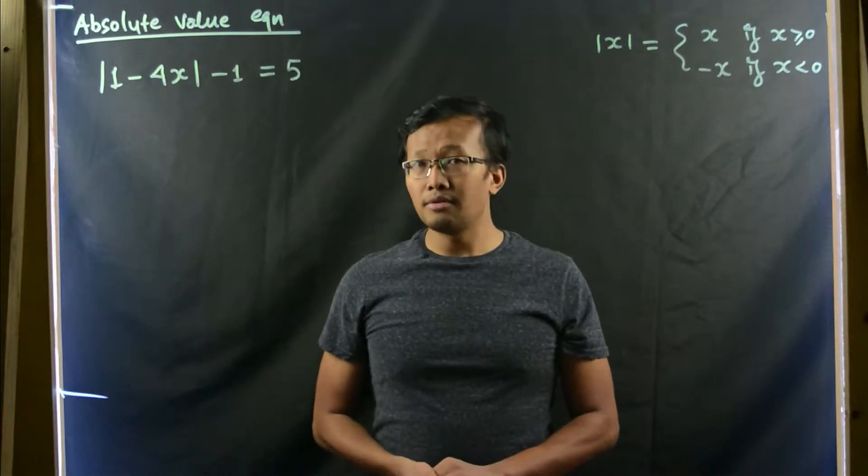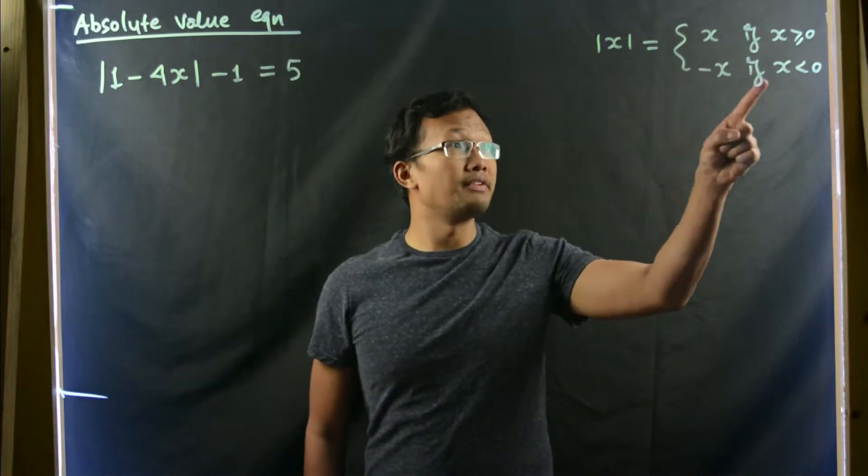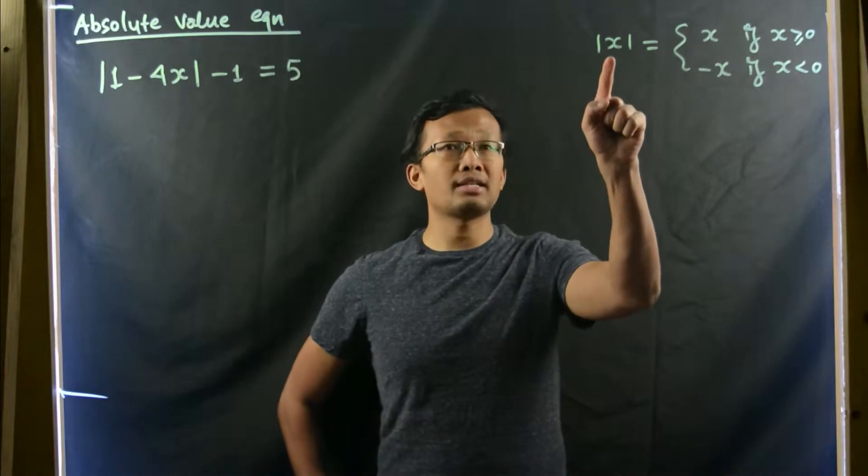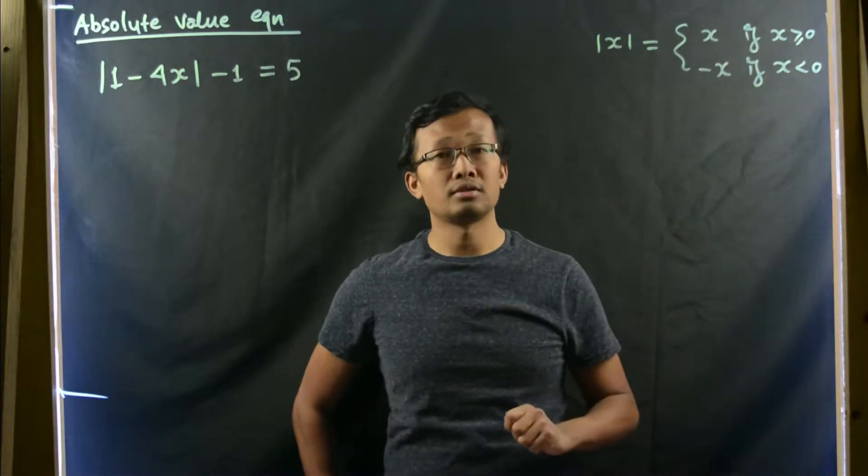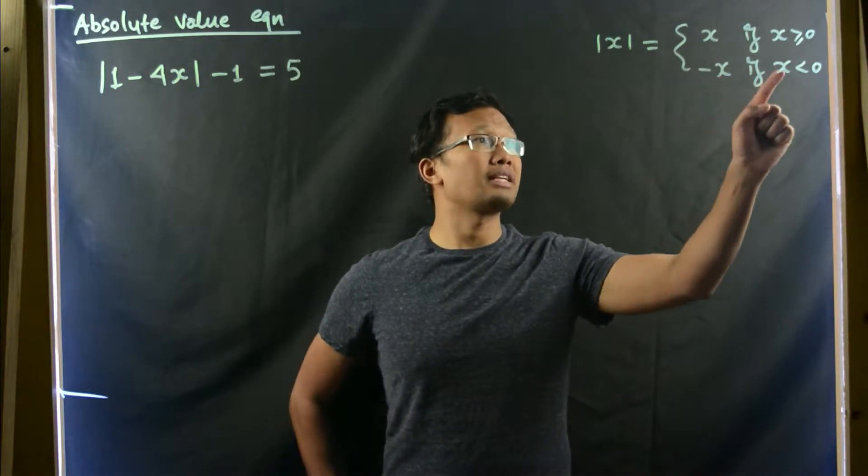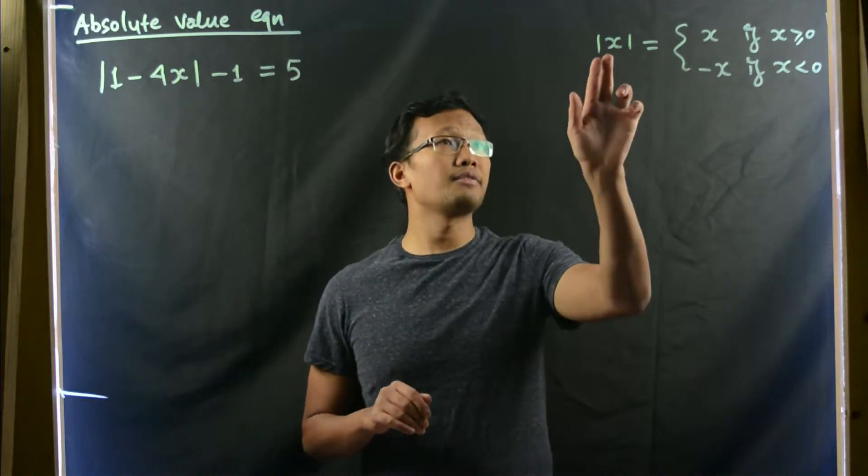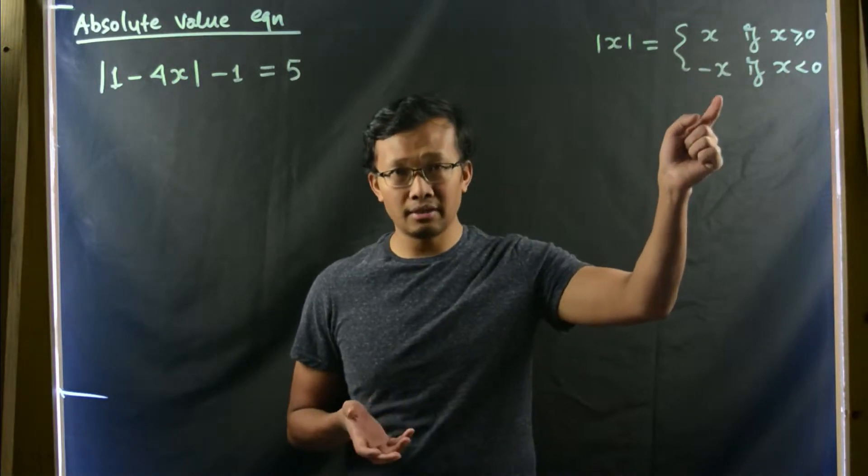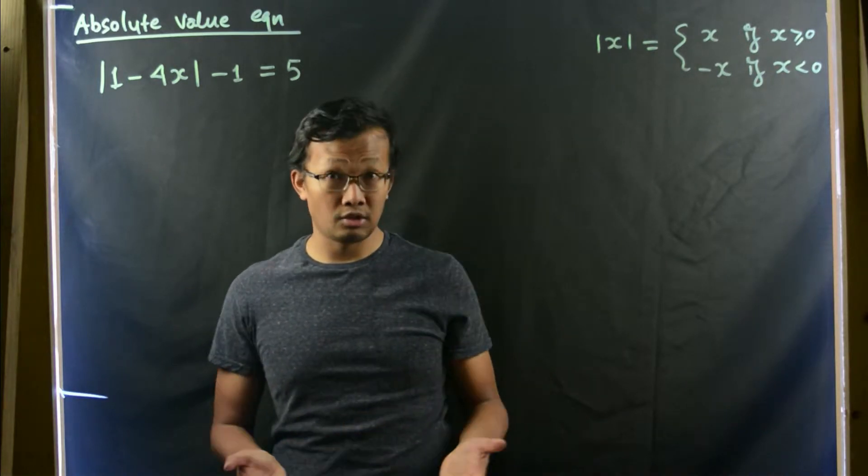To solve an absolute value equation, we need to look at the definition of absolute value function, which is absolute value of x equals x if x is greater than or equal to 0, and negative x if x is less than 0. Basically, this is saying that if the inner quantity is negative, you multiply it by negative. If it's positive, then you just keep it as it is.